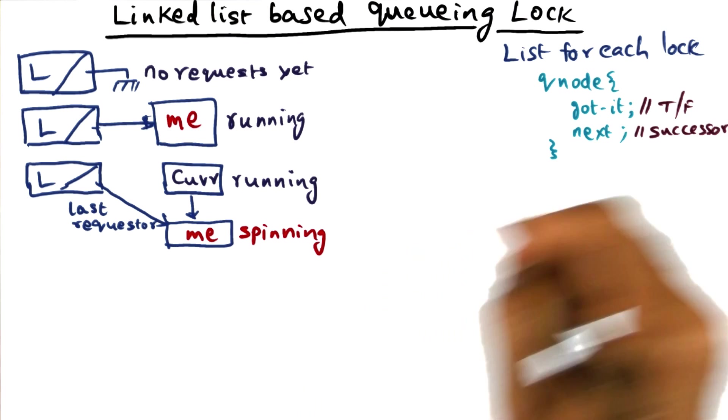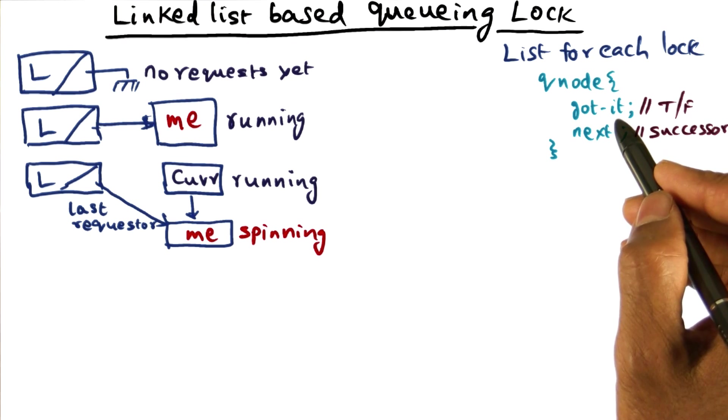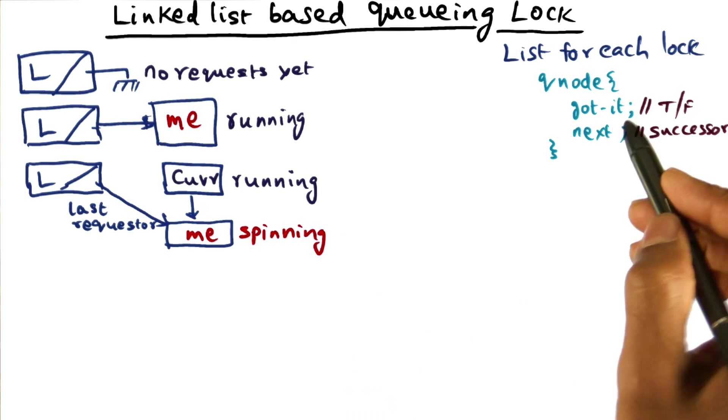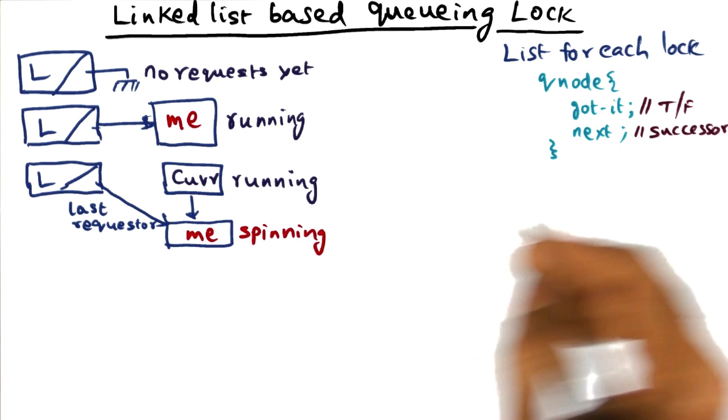So this is a data structure that is associated with me. And one of the fields is the guarded field in the data structure. So I'm going to spin on this guarded field in the data structure, waiting for this guy to set it to true.